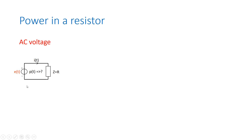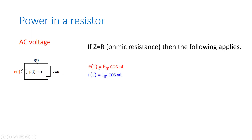This is a sine wave voltage, so we can express that mathematically as a sine, or we can write it down as a cosine, because a cosine is a sine only 90 degrees shifted in time. Let's write it down as a cosine, and then we get E as a function of T equals the amplitude Em — with a capital E — times the cosine of omega times T. And this omega is 2 times pi times the frequency of this voltage source. Because this is a resistor, the current also has a cosine wave. So the current I as a function of T is the amplitude of the current Im times the cosine of omega times T.